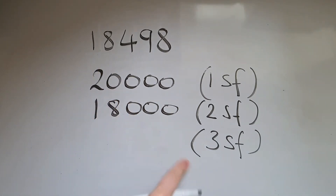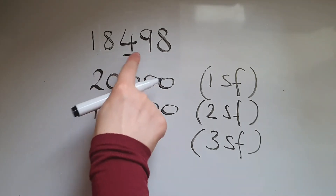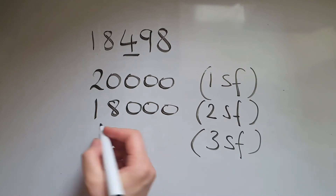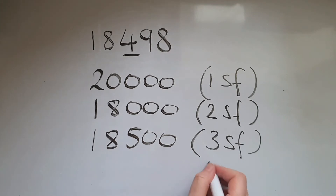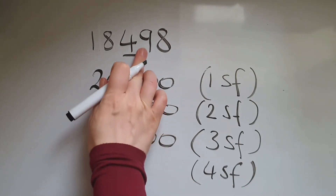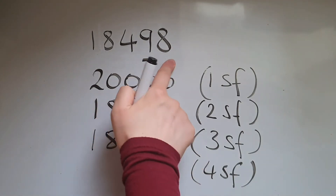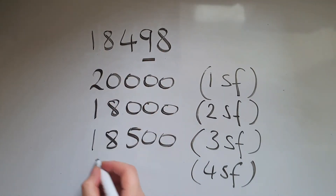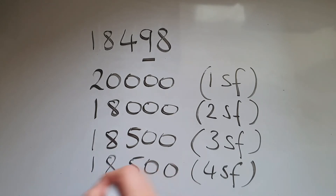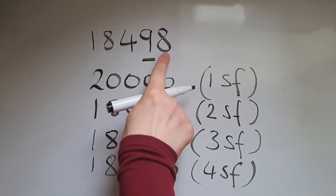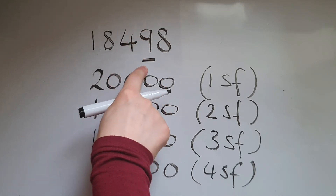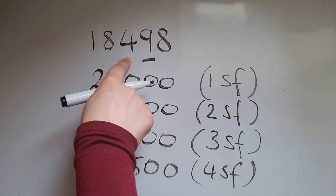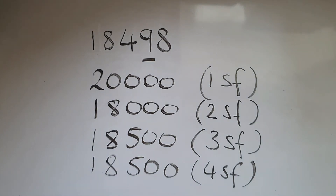Rounding this to 3 significant figures means we've got to round to the nearest hundred. So looking at 9 means we round this up, so that is 18,500. To 4 significant figures, we're going to round up as well. If you round this up it means we go to 10, so 0 down here and this becomes 5 — so 18,500.